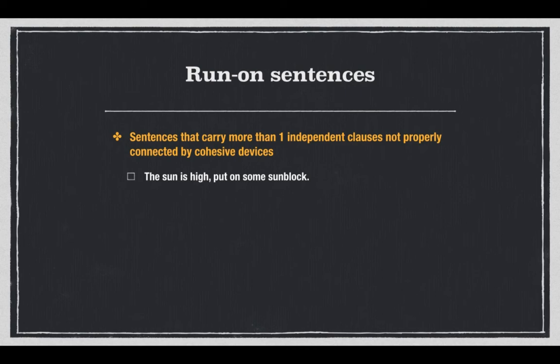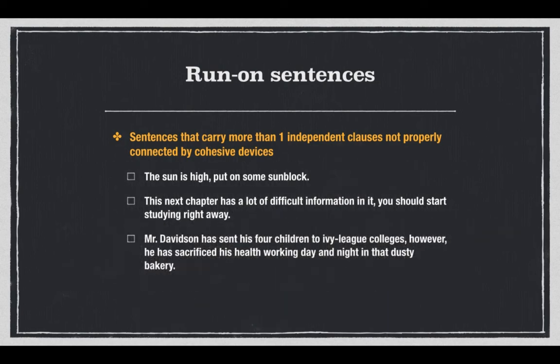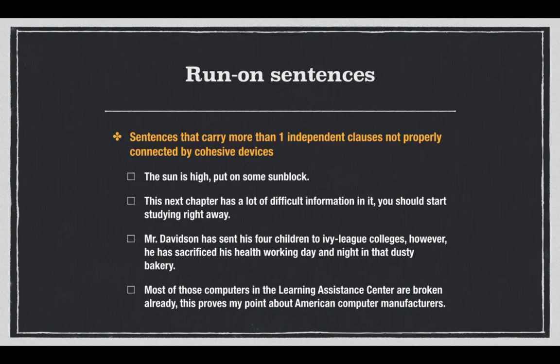So we should try to correct this. Number two: 'The next chapter has a lot of difficult information' — an independent clause — joined with a comma to another independent clause: 'you should start studying right away.' Number three is the same: 'Mr. Davidson...' is an independent clause, however 'he has sacrificed health' is also an independent clause, but joined with a comma. Lastly, 'most of those computers' — independent clause — comma — 'this proves my point' — also another independent clause.